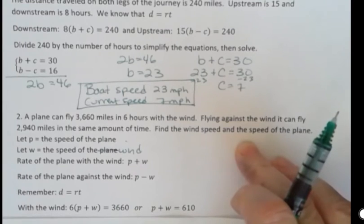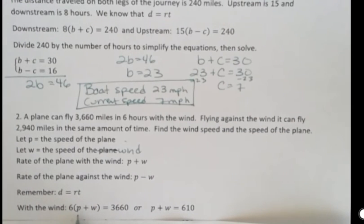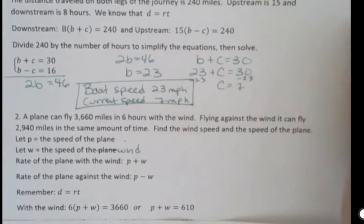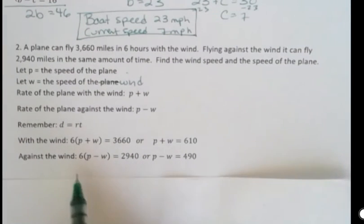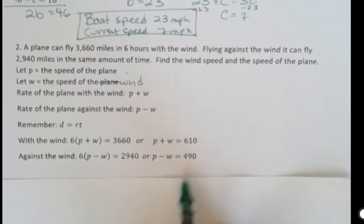Remember that distance equals rate times time. With the wind, we're going plane plus wind. It took six hours to fly 3,660 miles. And if I divide 3,660 by six, I get p plus w equals 610. For the other one, I'm going against the wind. I flew for six hours, but I went against the wind, and I had a total distance of 2,940. And if I divide 2,940 by six, I get 490. So here's my systems of equation.